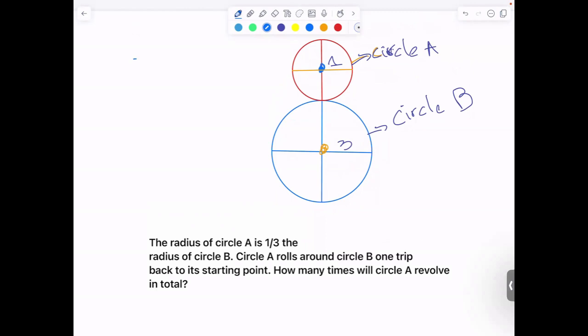Okay, we have circle A, which is one-third the radius of circle B. Let's say circle A has radius 1 and circle B has radius 3.